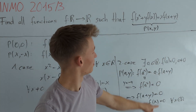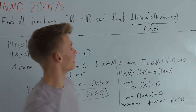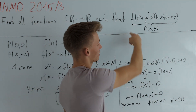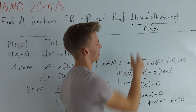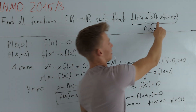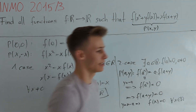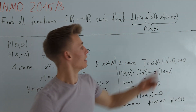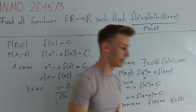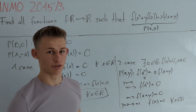Plugging f(x) = 0 back into the equation: the left hand side is f of something, which equals 0. The right hand side is x·f(a + y), which is also 0. Therefore f(x) = 0 is indeed a solution.